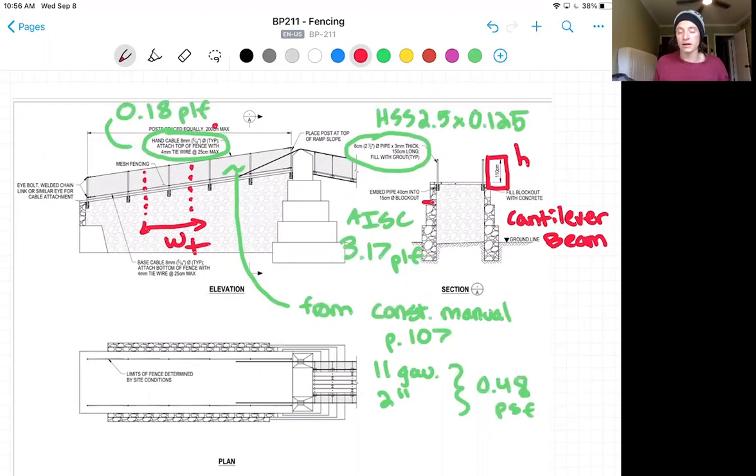Now in green here, I have some of the lookup dimensions we have. So first, you can see the HSS 2.5 by 0.125. That is just a steel shape for a two and a half inch diameter pipe. In here, it says 3 millimeter or 0.125 inch thickness. And we can look that up in the AISC shapes database that I've referred to elsewhere in this course and have attached below. And that is 3.17 pounds per linear foot.